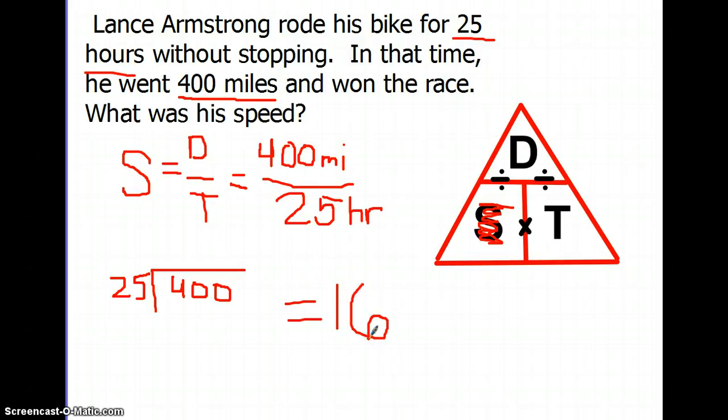Now if we just leave the number 16, technically that is incorrect because it doesn't have units. And remember we stressed how important the units were when we're talking about speed problems. So because the distance was given in miles, and the time was given in hours, then our units are miles per hour.